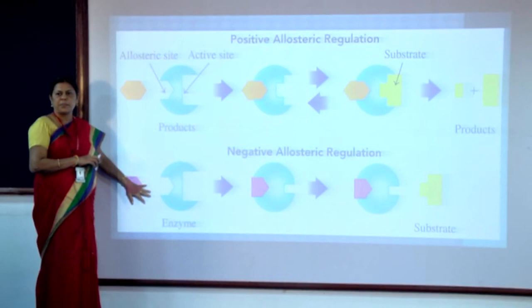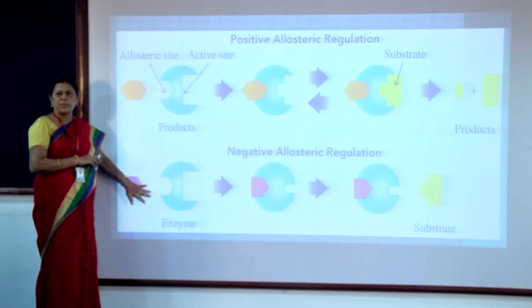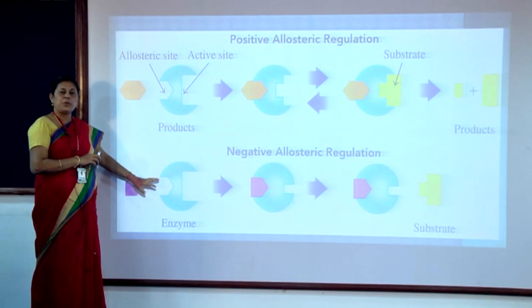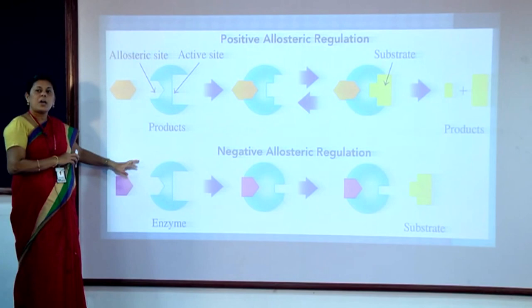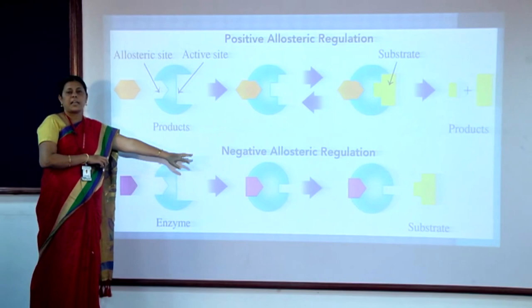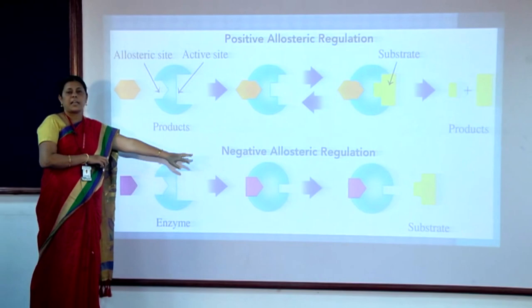For example, the enzyme contains 12 subunits or 12 binding sites on its surface in addition to the active site. An allosteric inhibitor or modulator binds to these sites and inhibits the rate of reaction. A positive modulator binding to the allosteric site enhances the rate of reaction, while a negative modulator inhibits the rate of reaction. CTP is an example of a positive modulator.